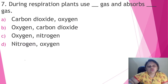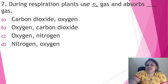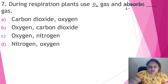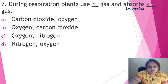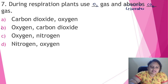During respiration, plants use which gas and absorb which gas? For respiration, both plants and animals use the same gas — that is oxygen, O2. And which gas do they liberate? They liberate carbon dioxide gas, formula CO2. So the correct answer is option B, that is oxygen and carbon dioxide.